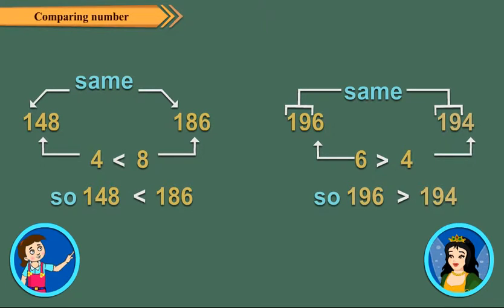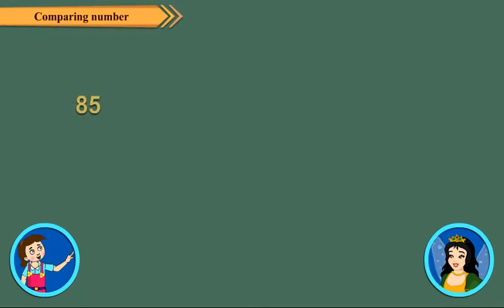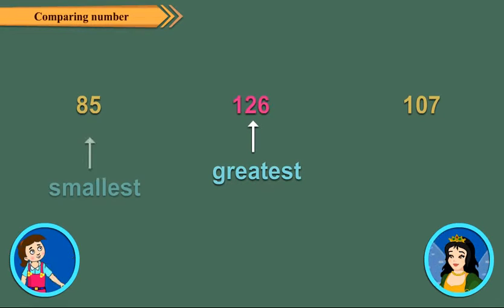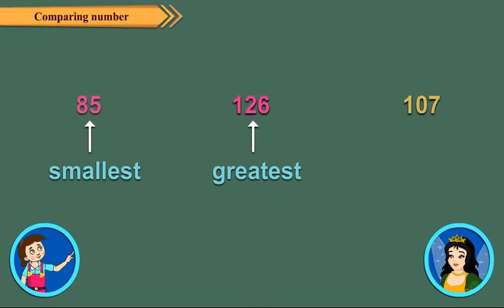Now, please tell me about ordering of numbers. Neha, tell me the greatest number among 85, 126 and 107. 126 is the greatest number and 85 is the smallest number.